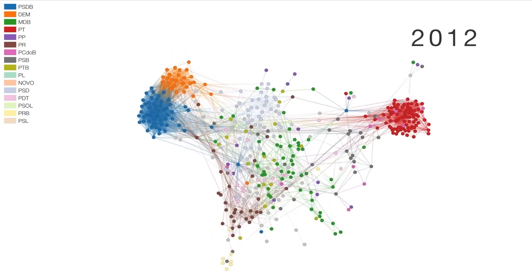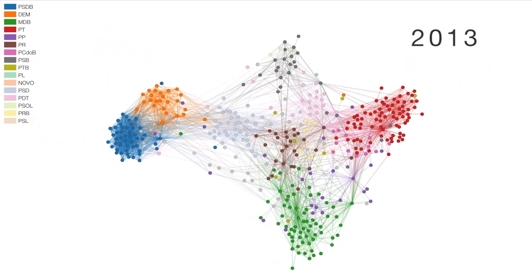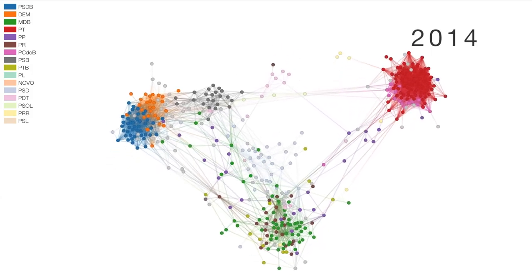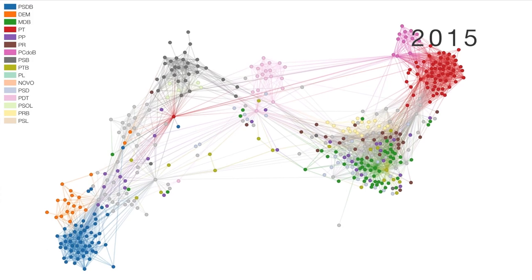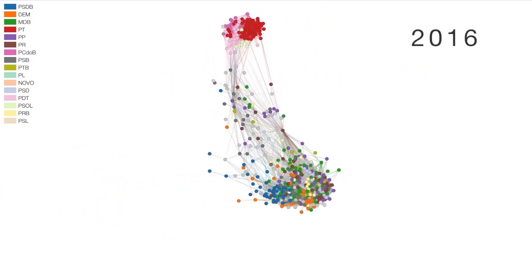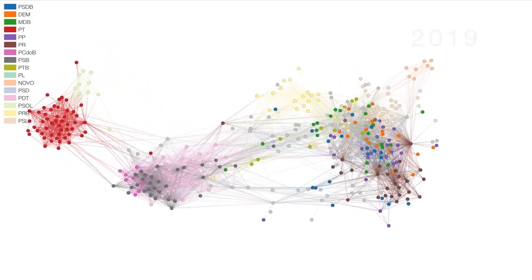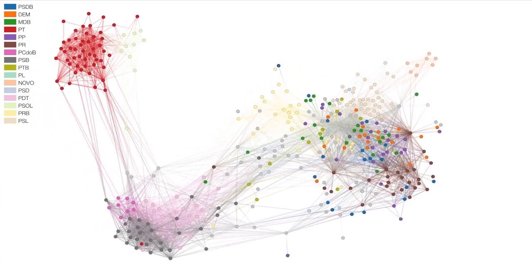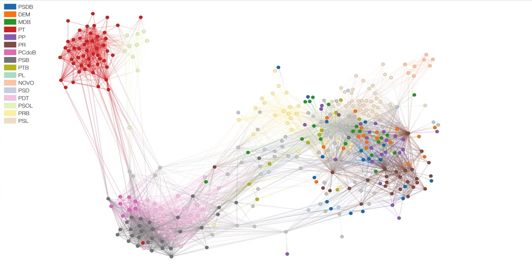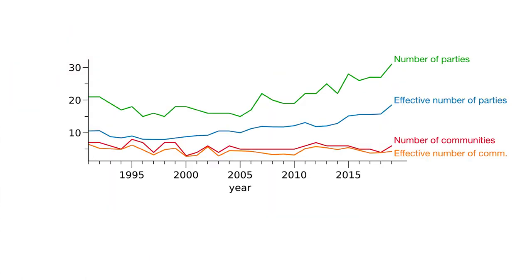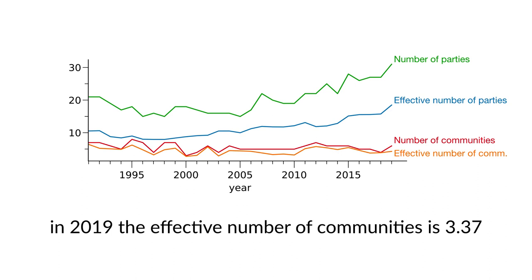We now have some networks, where each node represents a representative. You can see how it's evolving over time — there are communities, the color indicates the political party of the representatives, and the structure is always changing, so very far from stationary. The first thing we did was obtain the community structure for the networks over time, and we found that most of the time the effective number of communities is much lower than the number of parties, which indicates that they form large coalitions.